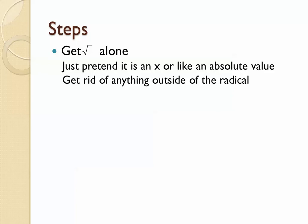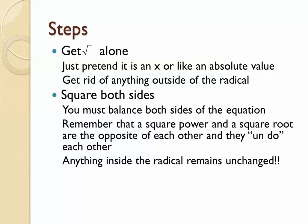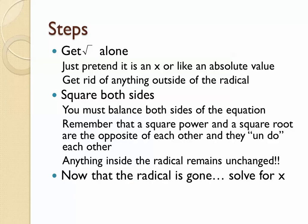So here are the steps for solving an equation that has a radical in it. First, we need to get the radical sign alone — there will be stuff underneath the radical, but we don't want anything on the outside. We're going to treat it just like it's our x and we're trying to get it alone, similar to how we handled absolute value. Once the square root sign is alone, we're going to undo the square root by doing the opposite operation, which is to square it — and to keep the equation balanced, we have to do it on both sides. Anything inside the radical remains unchanged. Once you get rid of the radical, we'll have just an x to solve for.